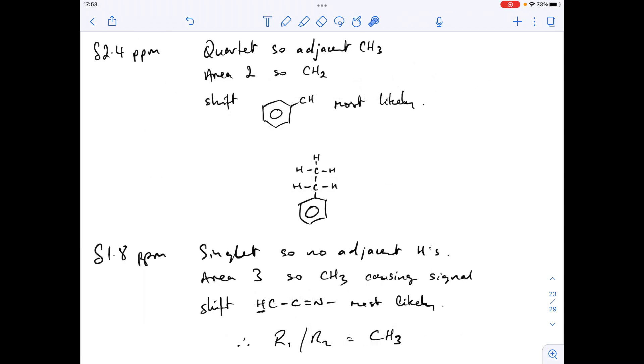So there's that information written up. So delta 1.8 ppm, singlet, so no adjacent hydrogens. Area 3, so CH3 causes a signal. The shift, we're going for the most likely option to be the one that they told us about, the new shift, H to C to C double bond N. So from that, we can say that either R1 or R2 is a CH3 group.